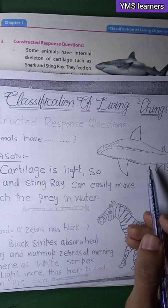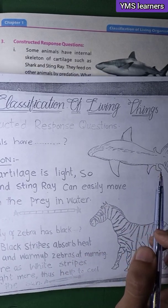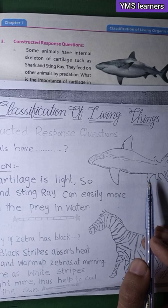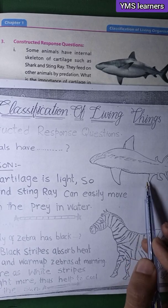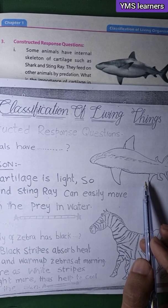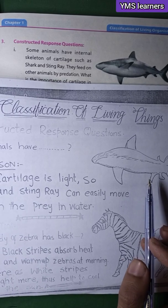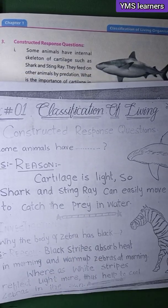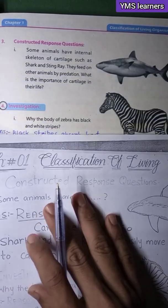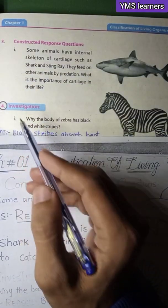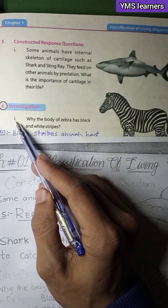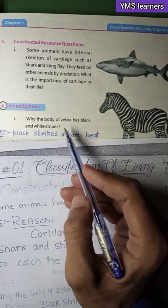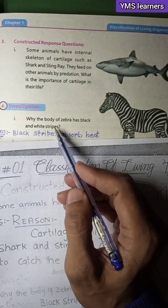We will see how the answer is. Investigation: Why does the body of a zebra have black and white stripes?